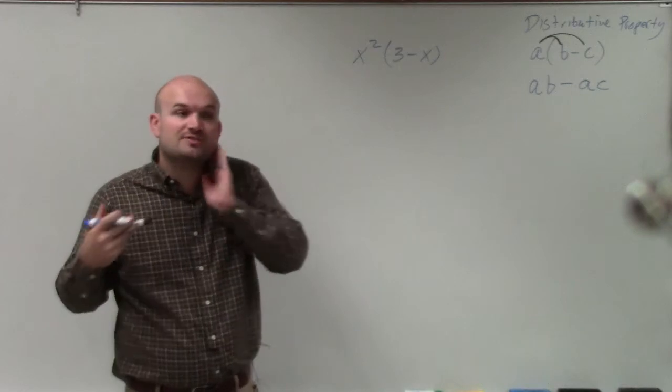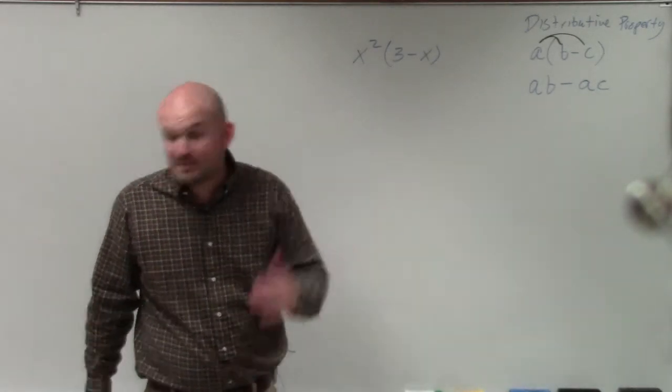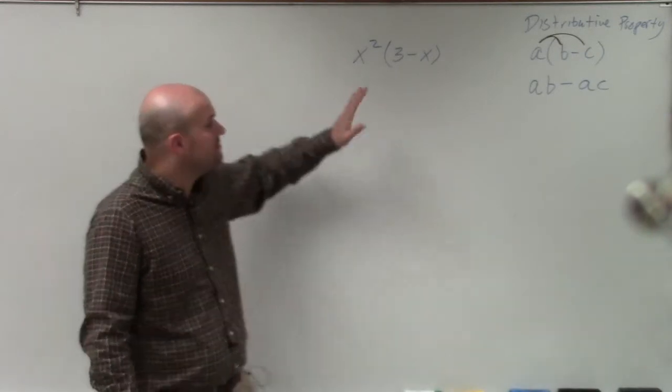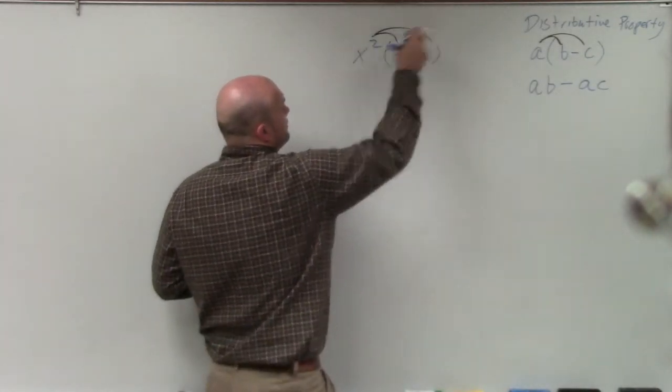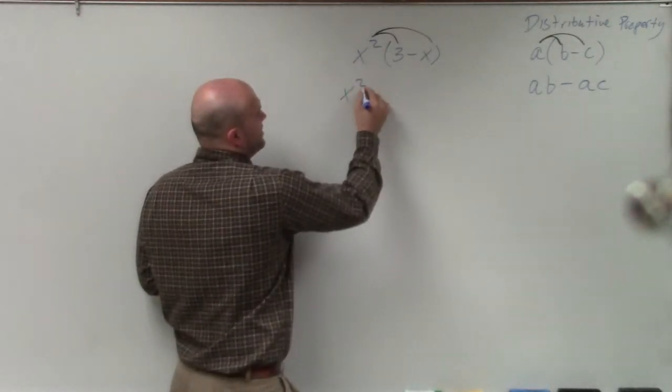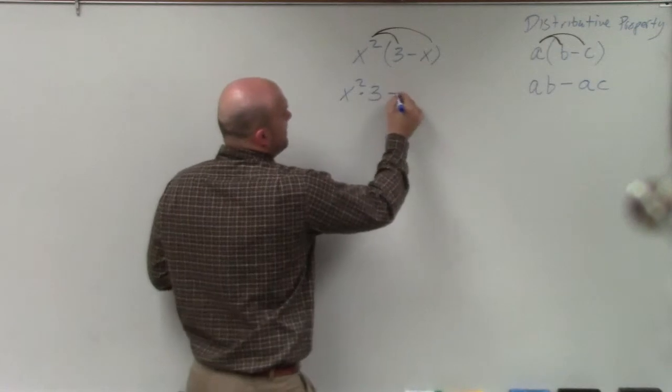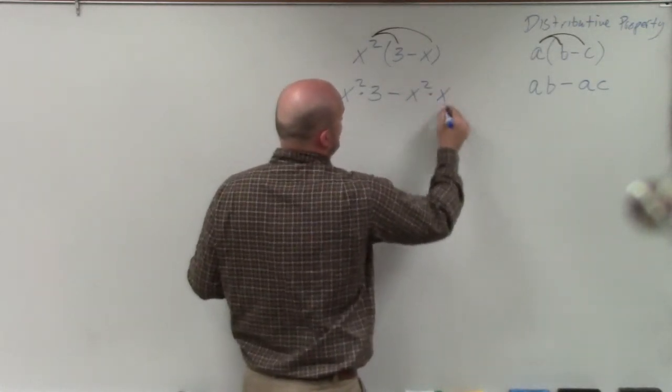So I will show this by writing it out. And obviously, once you guys get more and more practice with this or as it starts coming back to you, you don't really need to show every single one of these steps. You can actually just multiply that out. But basically, I'm going to have x squared times 3 minus x squared times x.